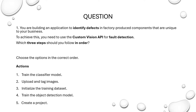You are building an application to identify defects in factory produced components that are unique to your business. To achieve this, you need to use the custom vision API for fault detection. Which three steps should you follow in order? Choose the options in the correct order.